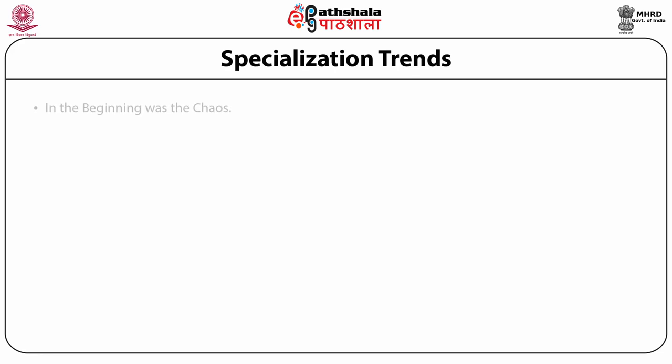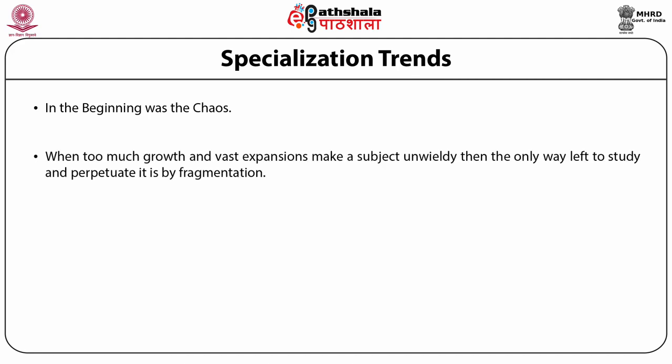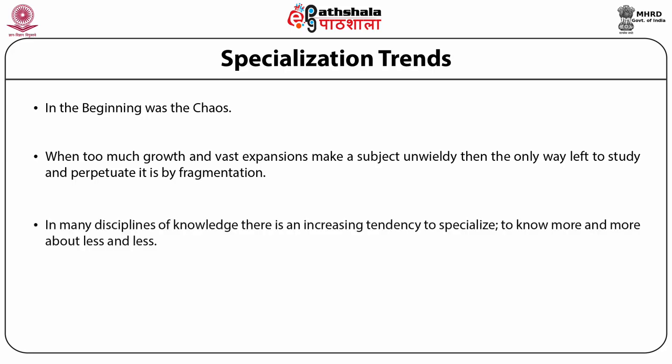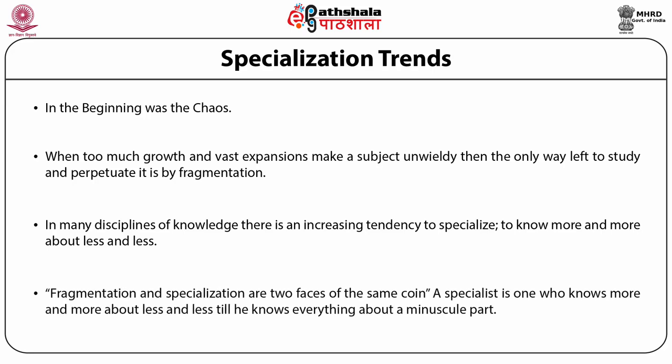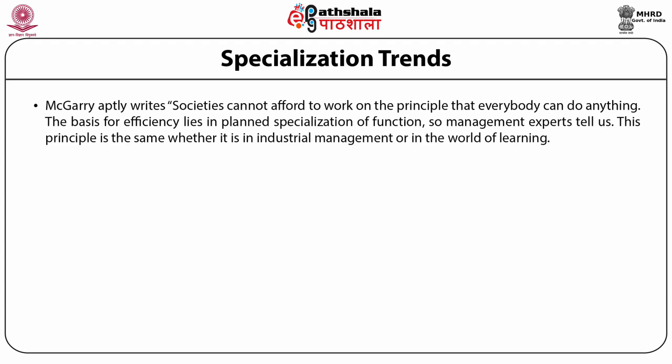Specialization trends — the first trend for the growth of knowledge: When too much growth and vast expansion make a subject unwieldy, then the only way left to study and perpetuate it is by fragmentation — divide into small pieces to make it comprehensible. In many disciplines of knowledge, there is an increasing tendency to specialize — to know more and more about less and less. Fragmentation and specialization are two phases of the same coin, says Ranganathan. A specialist is one who knows more and more about less and less till he knows everything about a minuscule part.